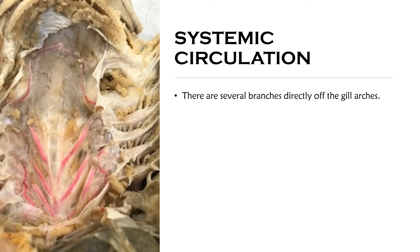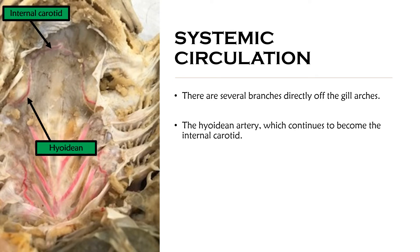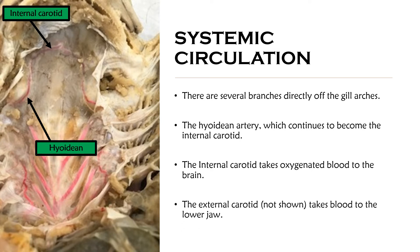There are several branches directly off the gill arches. One of which is the hyoidean artery, which continues to become the internal carotid. The internal carotid carries oxygenated blood to the brain. The external carotid, which is not shown, also branches off the gill arches and takes blood to the lower jaw.